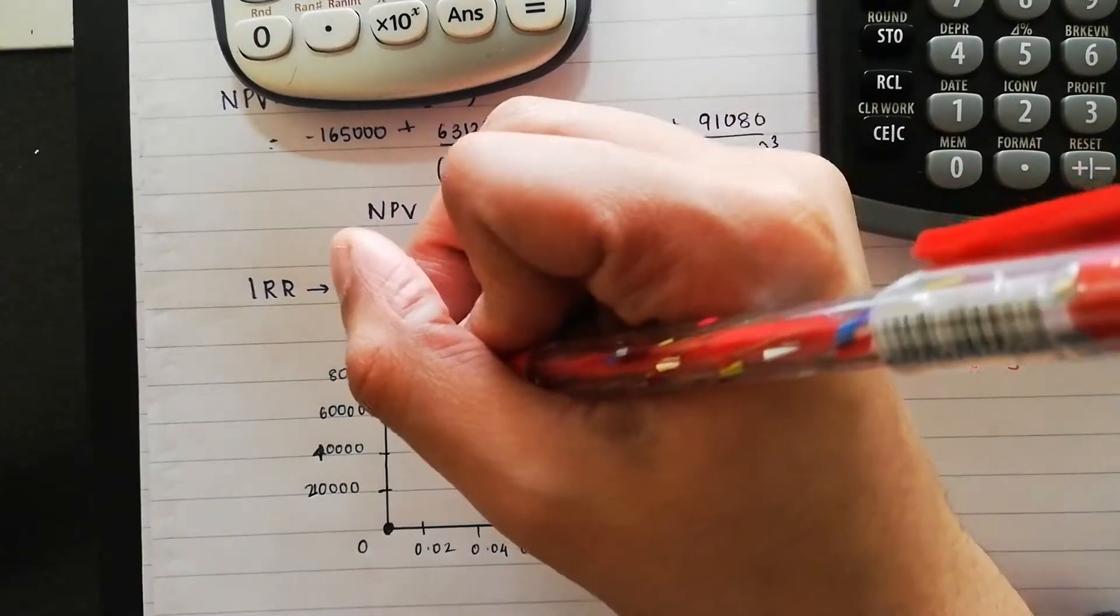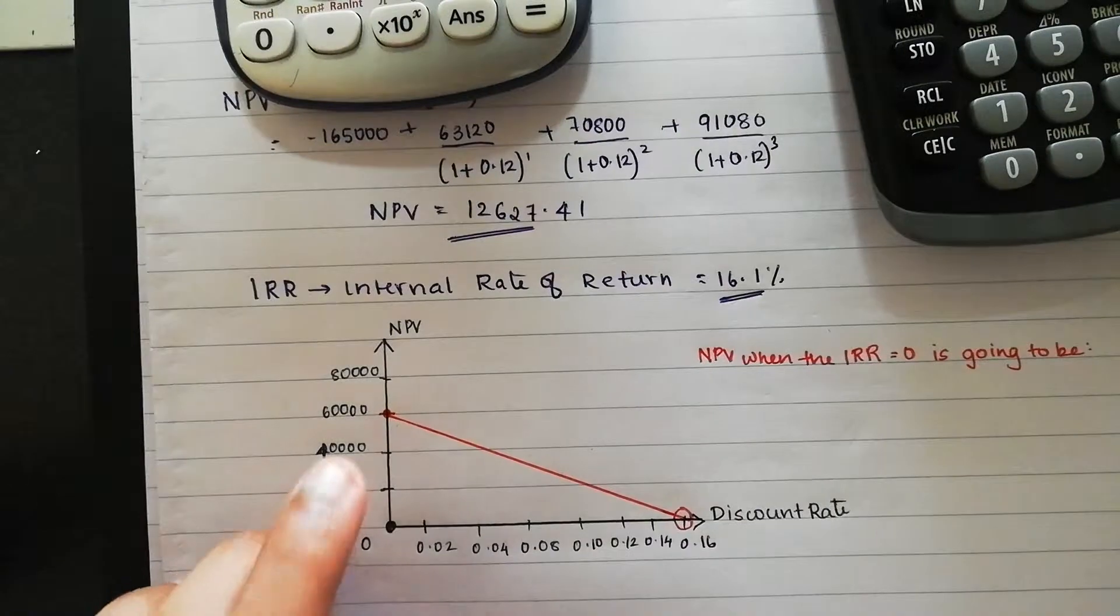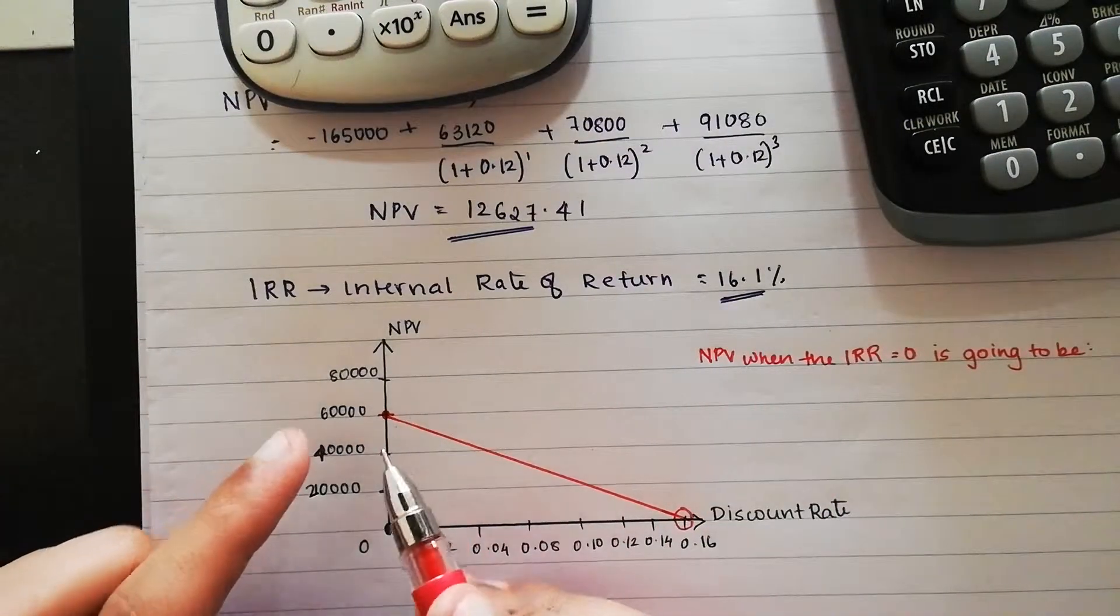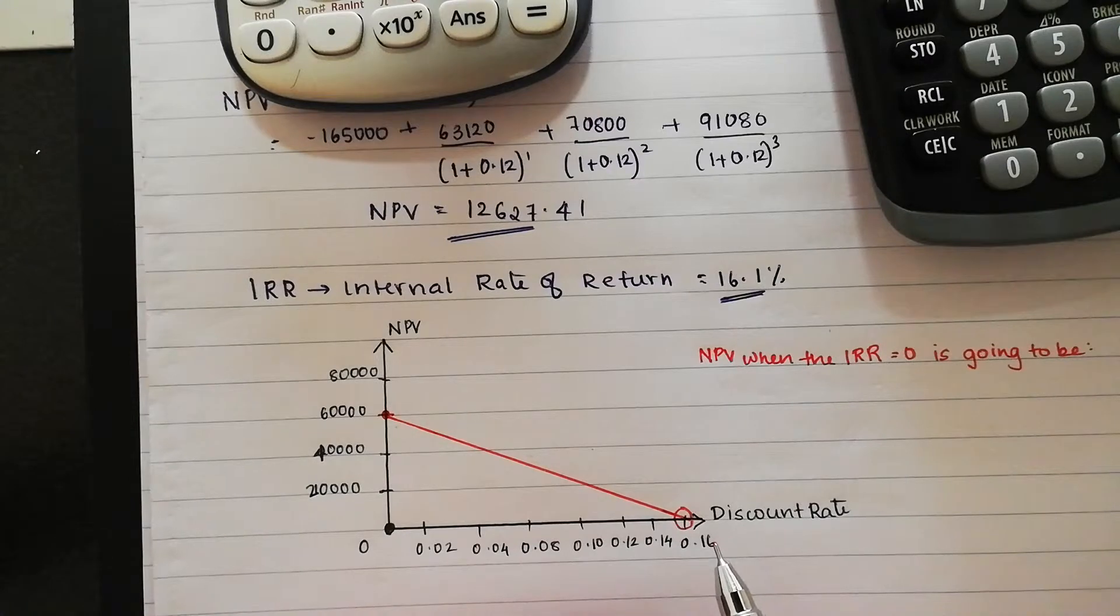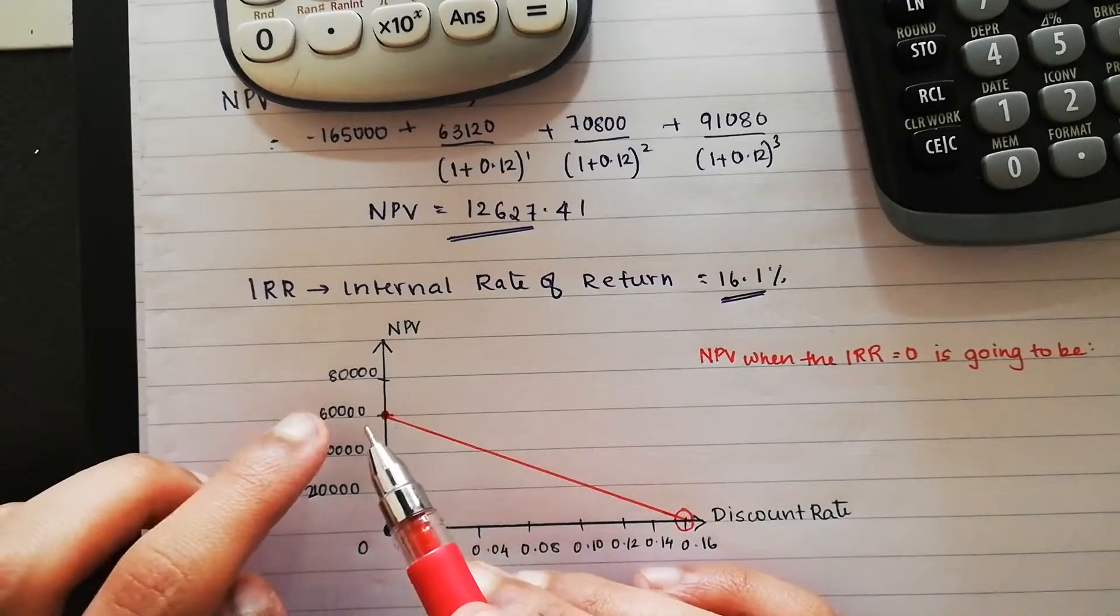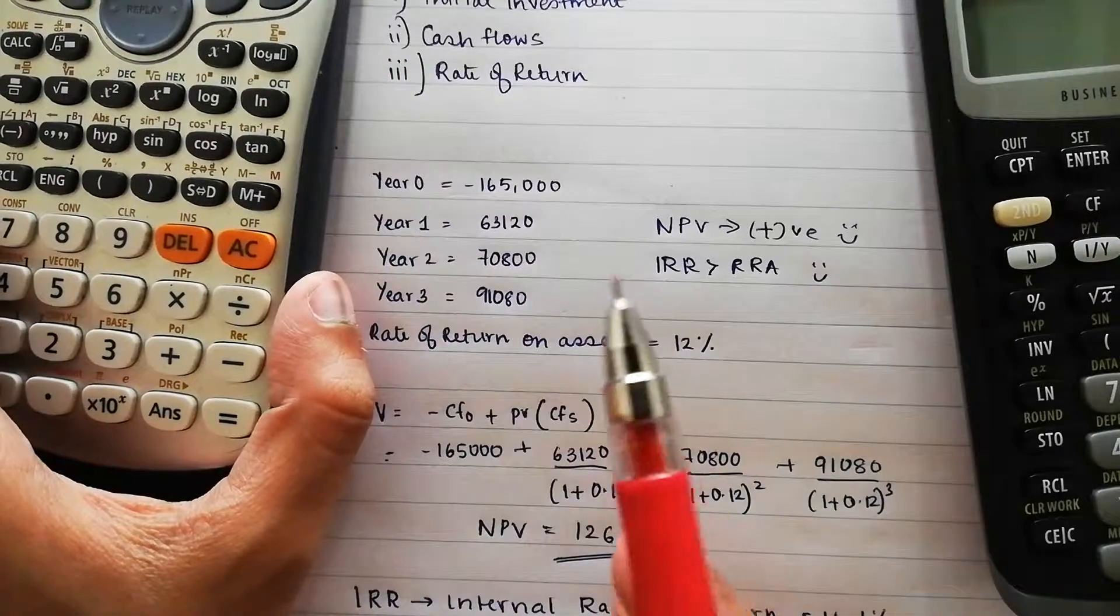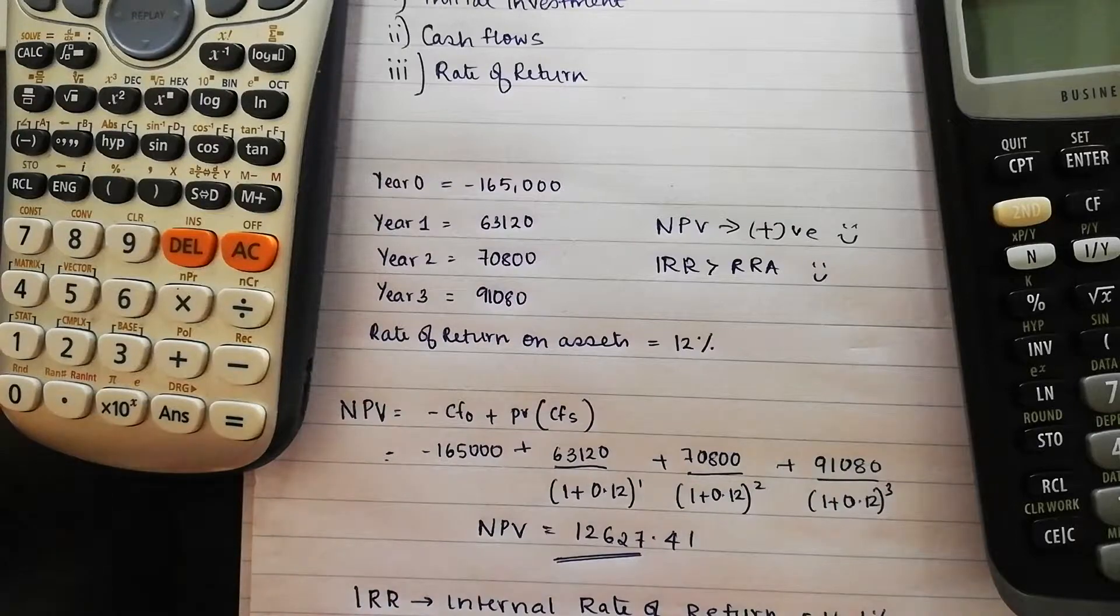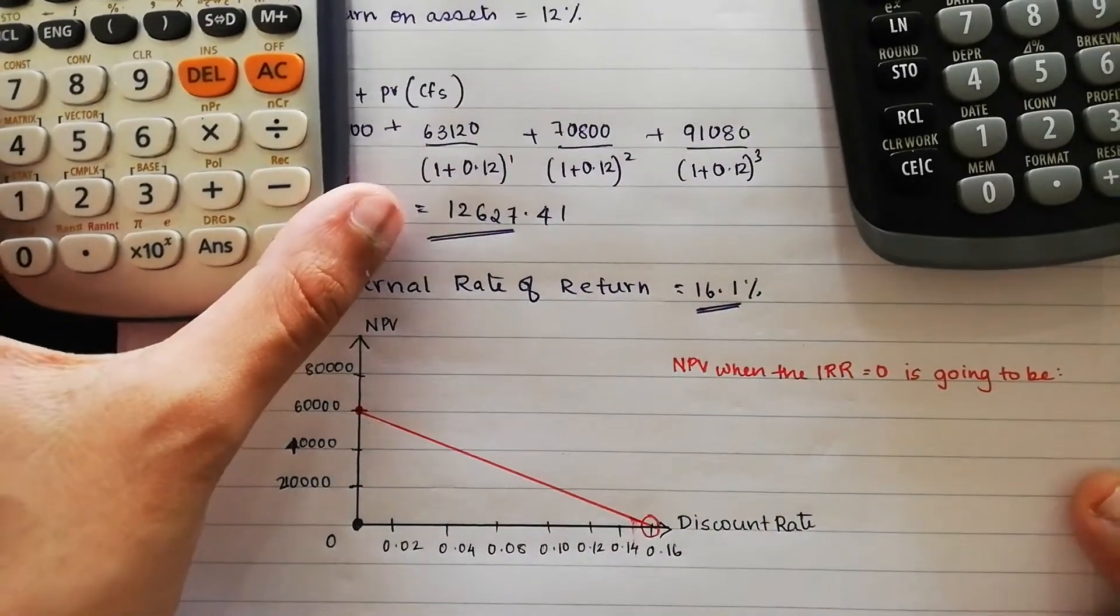And also just know that this line won't be a linear line. It can go curved. But just to show the relationship, like I stated earlier, when your NPV is 0, your IRR is going to be 16.1%. And the way to calculate your NPV when the discount rate is 0 is to add up all your cash flows without taking any present values, without taking any interest rates, just add up all your cash flows.